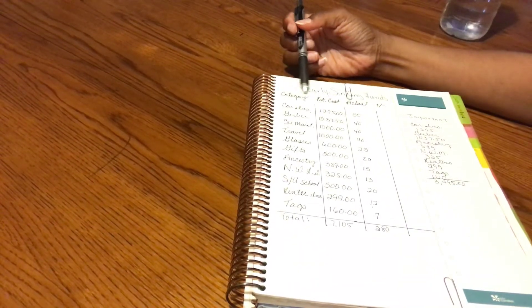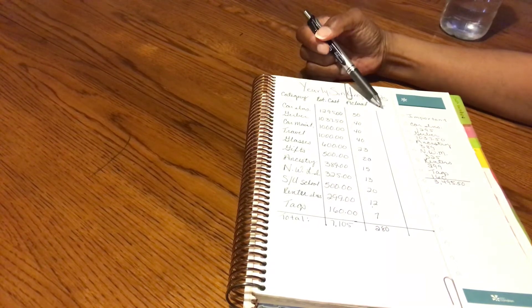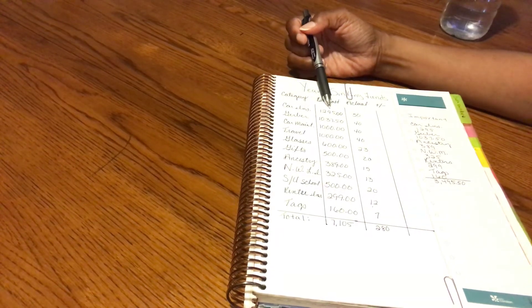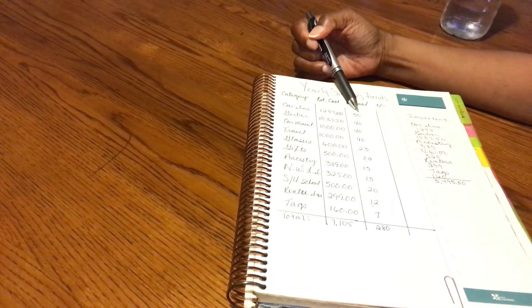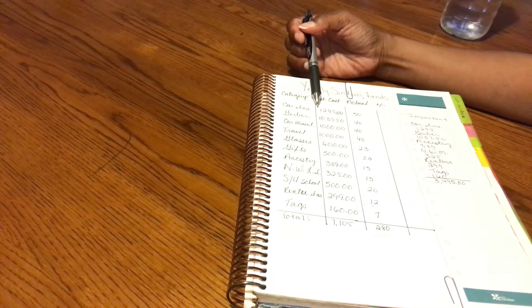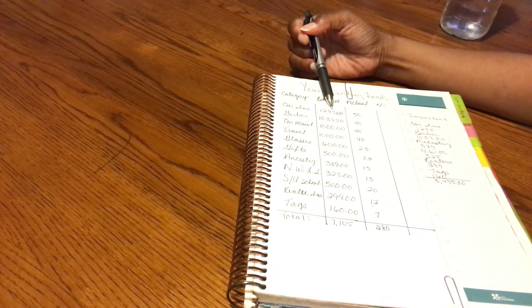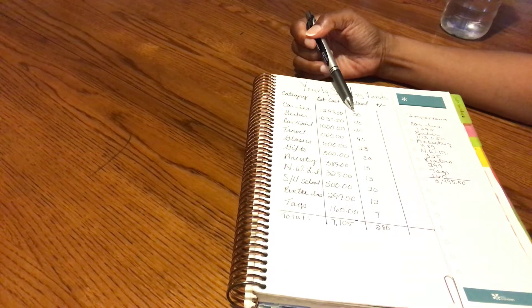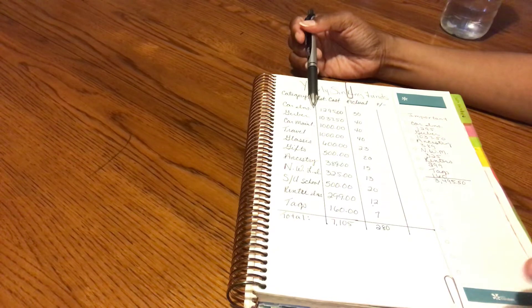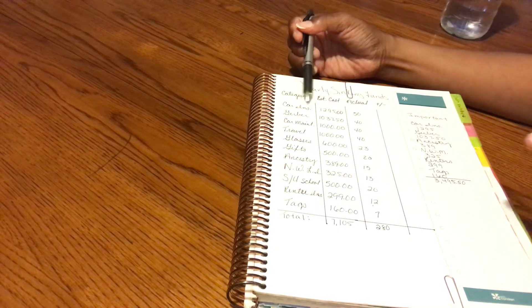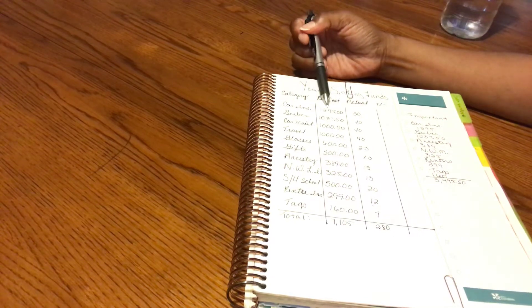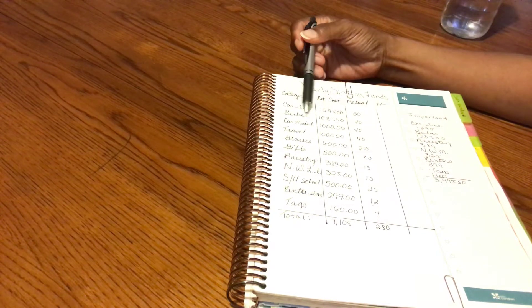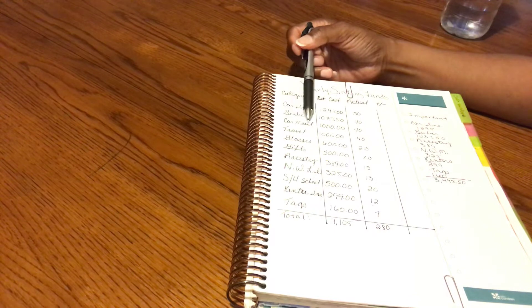This is my yearly sinking fund. We have our categories, estimated cost, actuals, and plus or minus. What I estimated for the car insurance was $1,295 at $50 per pay period. I took that $1,295 and divided it by 26 pay periods in a year, which would be $50 per pay period.